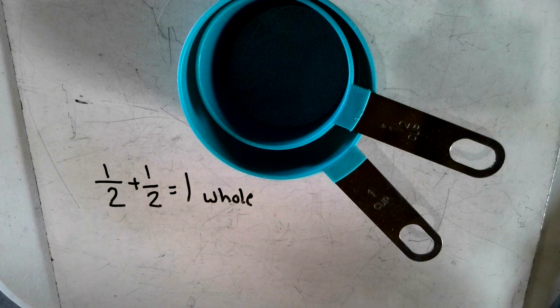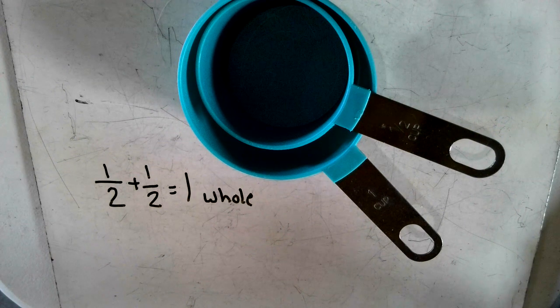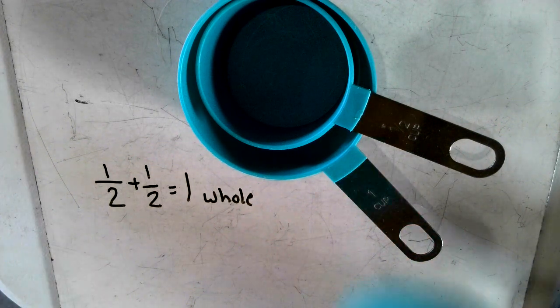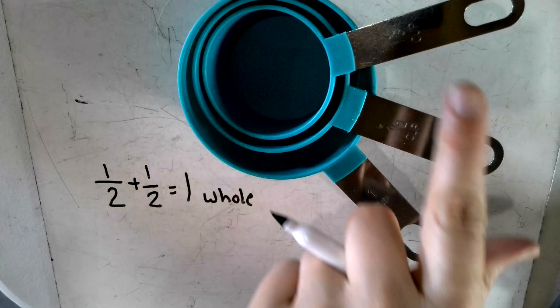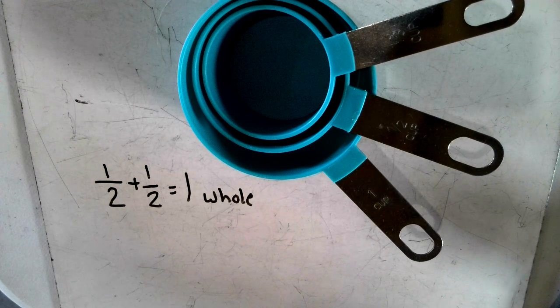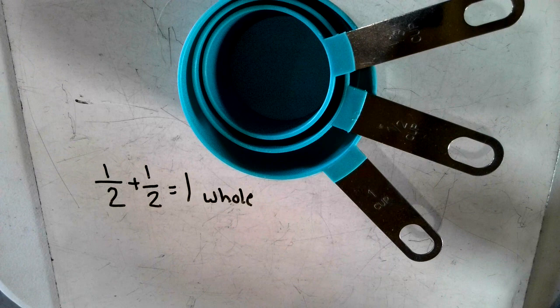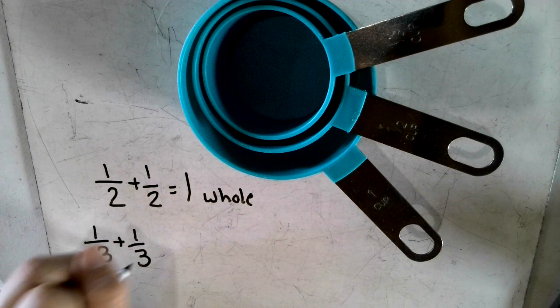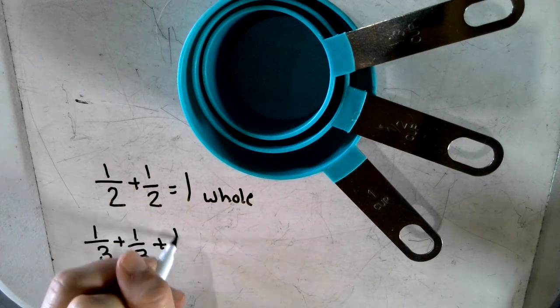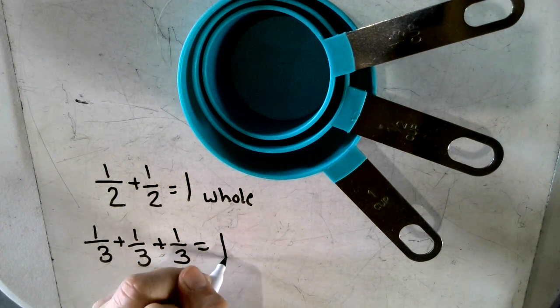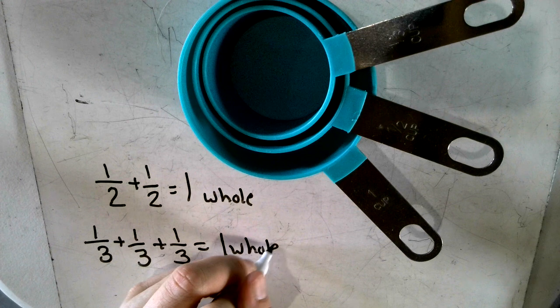Now, as you can see, the next size would be the third cup, one third cup. If you need to measure stuff with third cups, we have one third plus one third, that's two thirds. But if you add another third to it, that equals one whole cup. So it takes three of that size.